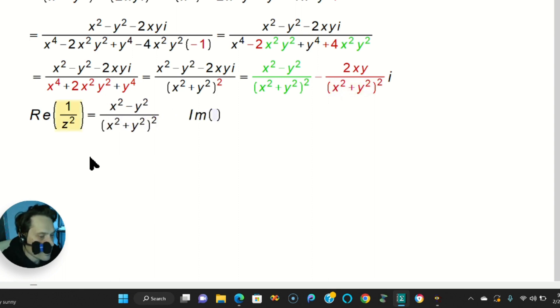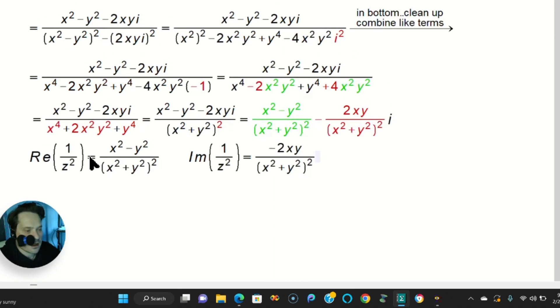So the real part of 1 over z squared essentially ends up being x squared minus y squared divided by x squared plus y squared, quantity, all of that squared. The imaginary part of that same 1 over z squared, that's equal to the negative 2xy, okay? And then this x squared plus y squared, and then quantity squared.